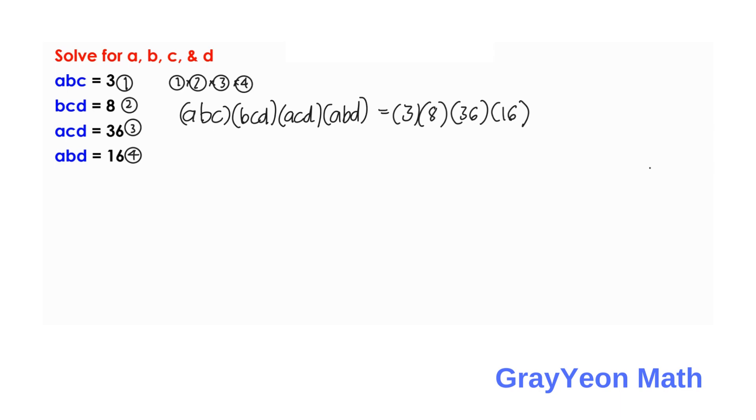Notice that you can see on the left hand side that variable a is multiplied by itself 3 times. So, we can write a cubed and same for b. We can write b cubed, c cubed, and d cubed.